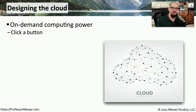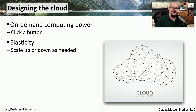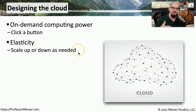The cloud has completely changed the way that we implement and design our applications. One significant feature of cloud-based technology is that everything is on demand. You click a button, you've got a server. You click another button, you've got a switch. You can click a button and create a server or an entire suite of servers instantly. This is called elasticity and allows you to scale up or scale down the systems as you need, creating exactly the system you need to run an application at any particular time without wasting resources or money.